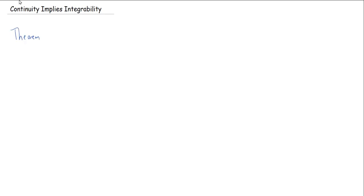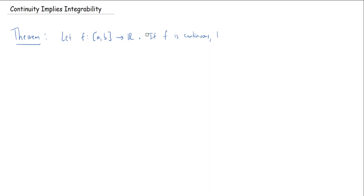So we'll start by writing down the theorem: Continuity implies integrability. So f is going to be a function from the closed interval [a,b] to ℝ, and it's going to be continuous. If f is continuous then f is integrable — or Darboux integrable, if somebody is checking what type of integration we're doing.